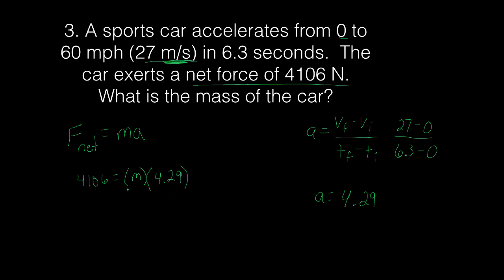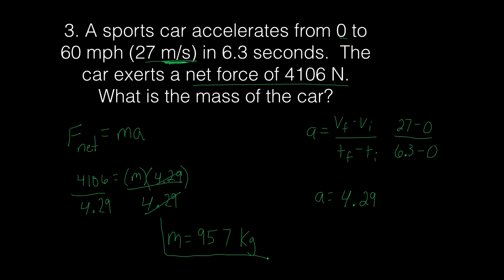To solve for the car's mass, we divide each side by 4.29. The 4.29s cancel on the right, so mass equals 4,106 divided by 4.29, giving us a mass of 957 kilograms. Mass is always measured in kilograms, so that is the mass of the car.